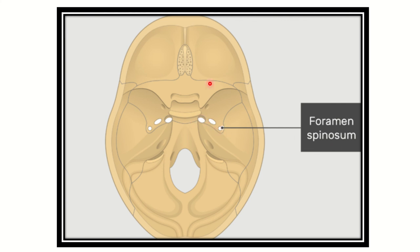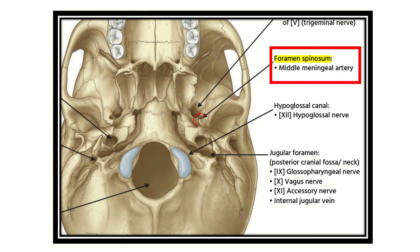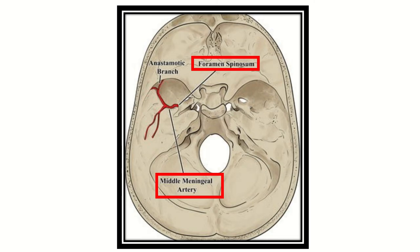Here we can see the foramen rotundum and some other structures at the skull base. We can see the boundary of this bone. In the third picture we can also see the foramen spinosum in the lower part of the skull base. Through the foramen spinosum an important content passes — this is the middle meningeal artery, which is very important.